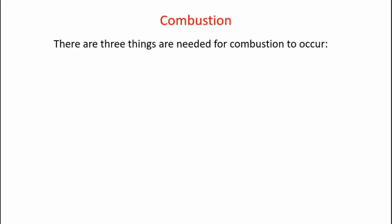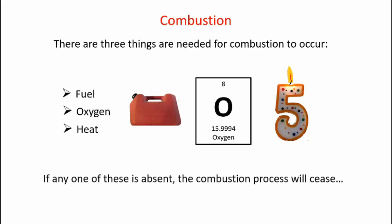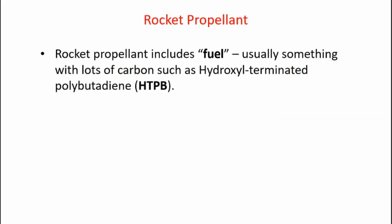Now there are three things that are needed for combustion to occur. First, we need some sort of fuel. Second, we need oxygen. And finally, we need a heat source to get the reaction going. Now if any one of these three things is absent, the combustion process will never start, or if it started and one of these is taken away, the combustion process will actually stop.